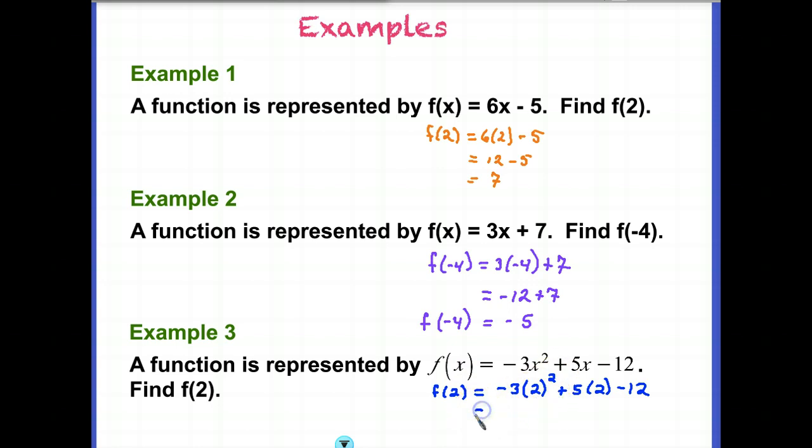So what we need to do is -3 times 2², which is 4. Plus 5 times 2. We can do that now because we've cleared our exponents. So plus 10 minus 12.